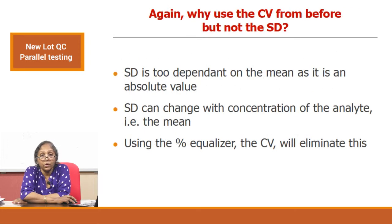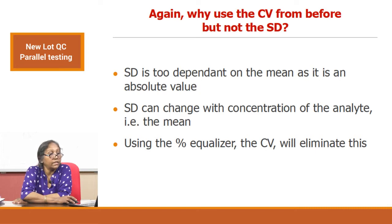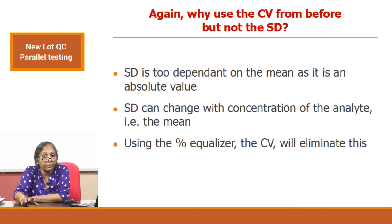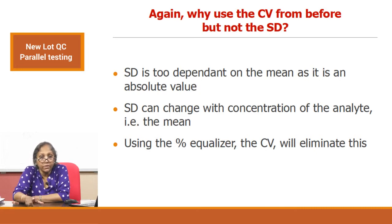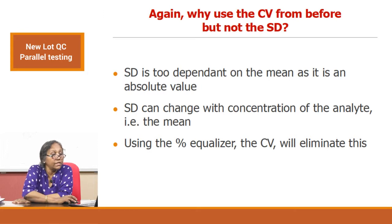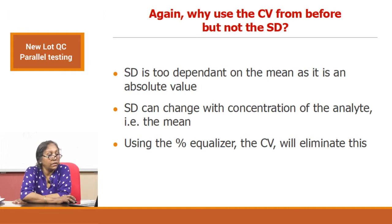Why use CV from the old lot and not the SD from the old lot? SD is too dependent on the mean as it is an absolute value. For example, if the old lot SD was 0.5, CV was 3 percent, and old lot mean was 18, but the new lot mean is 15 — the mean has changed, so the SD will have no meaning. CV is an equalizer: applying CV gives you the standard deviation regardless of mean change. SD can change with analyte concentration, but CV is independent of the mean and therefore better to use.